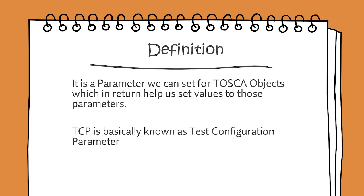As per the definition, TCP — that is, Test Configuration Parameter — is a parameter we can set for TOSCA objects, which in return helps us set values for those parameters. What TCP provides us is parameters which in return can be used to enter values and use them for the betterment of test cases.